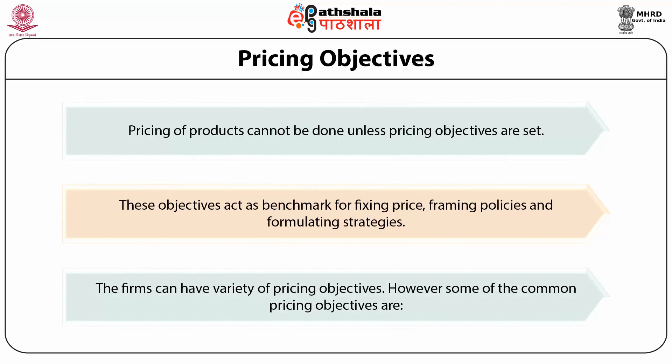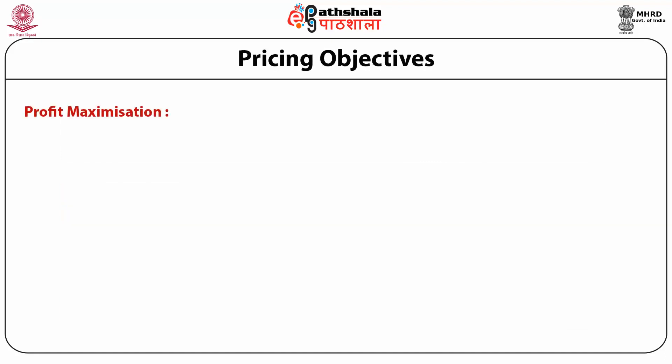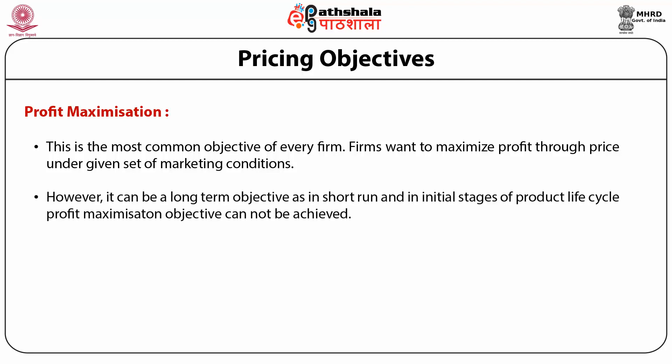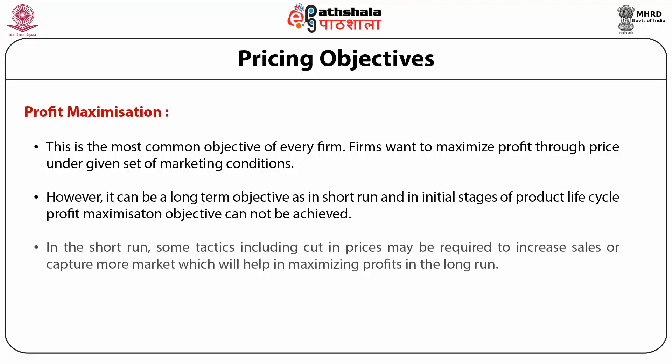Firms can have a variety of pricing objectives. One of the most common is profit maximization. Firms want to maximize profit through pricing under a given set of marketing conditions. However, it can be a long-term objective, as in the short run and in initial stages of the product life cycle, profit maximization cannot be achieved. In the short run, some tactics including cutting prices may be required to increase sales or capture more market, which will help in maximizing profits in the long run.